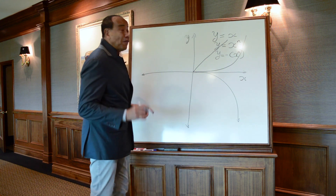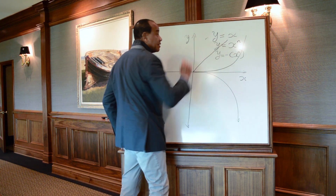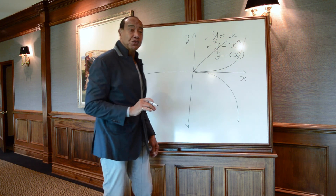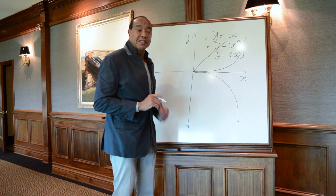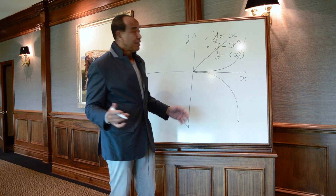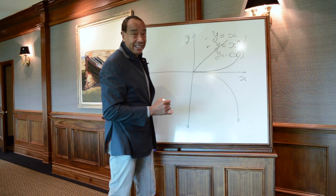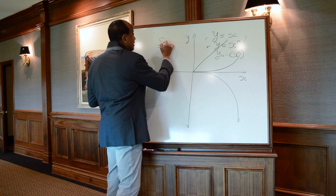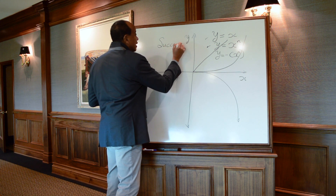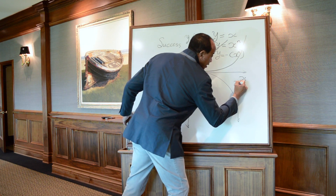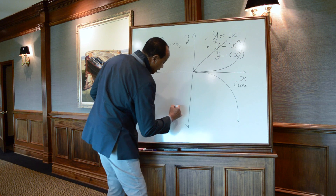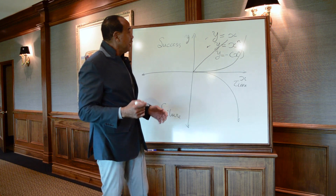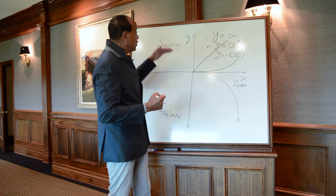Of the line graphs y equals x or y equals x to the nth power, which of those two line graphs would better represent people's expectations? This: y equals x. In other words, let's label the axes — the y axis is success, the x axis is time, and negative y must be failure.